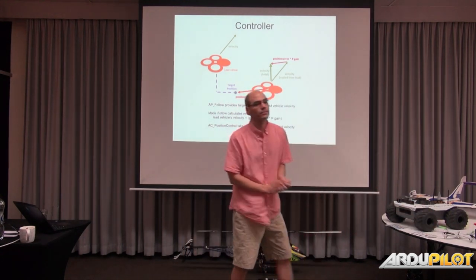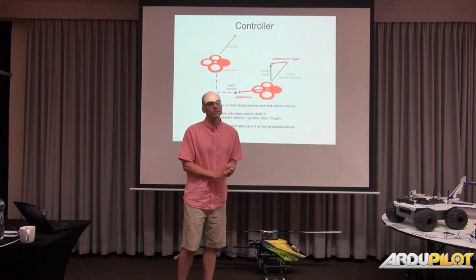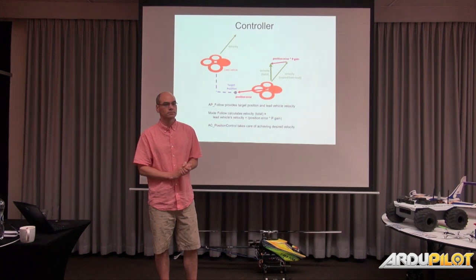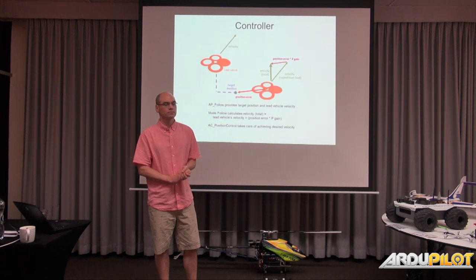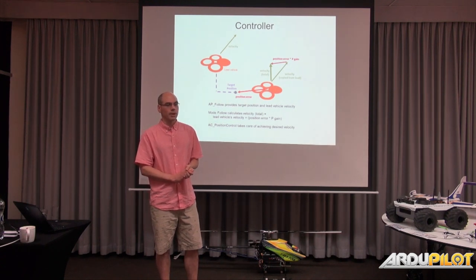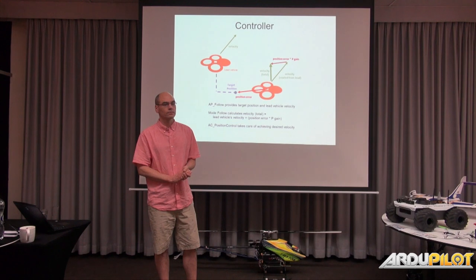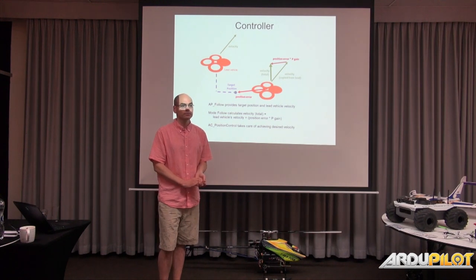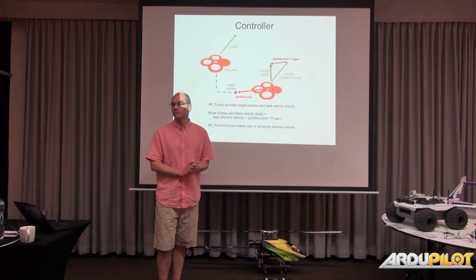Q: If we can generalize the avoidance enough to take any Global Position Int as input and just avoid in general, that would be very nice — so any vehicle on the network, even if it's not part of the follow swarm, would just be an avoidance target. If I know where it is on the network, I can avoid it. Randy: Yeah, I'm definitely hoping to keep it general. Thank you very much.